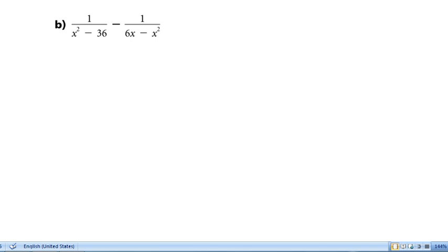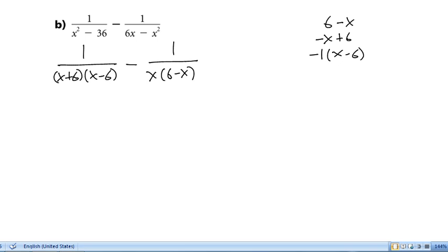So in example B, we're going to have to start by factoring both of the denominators. Our first denominator is difference of squares. So, we'll get x plus 6 times x minus 6. Our second denominator, we have a common factor of x. So, we end up with x times 6 minus x. Notice that 6 minus x and x minus 6 are related. If we take 6 minus x, we can rearrange that to negative x plus 6. And, if I factor a negative 1 out of that, I end up with x minus 6. So, instead of writing 6 minus x, I can have x minus 6 times negative 1, which I'll just put here.